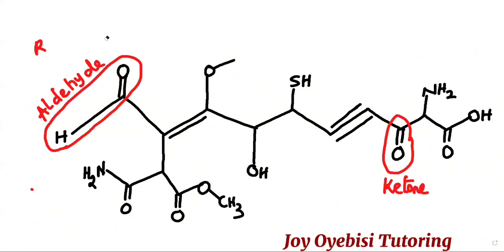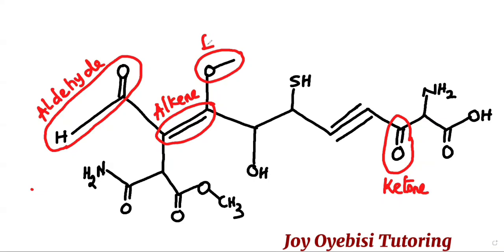The next one is known as an alkene. Whenever you have a C to C double bond, that is an alkene. This other one is an ether — an oxygen single bonded to two different carbon chains is known as an ether.